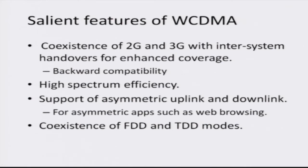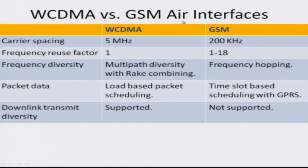WCDMA is backward compatible with other 2G services such as GSM. It has very high spectrum efficiency, utilizing the given spectral band very efficiently by transmitting at large data rates. It supports asymmetric uplink and downlink capacities and also supports both modes of communication known as FDD — frequency division duplex — and TDD — time division duplex. Looking at a specs comparison: GSM has a basic bandwidth of 200 kilohertz while WCDMA has a significantly higher bandwidth of 5 megahertz. WCDMA also has a frequency reuse factor of 1, using the spectrum very efficiently, while GSM has a frequency reuse factor of somewhere between 1 and 18.